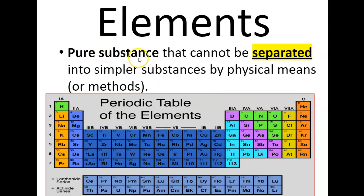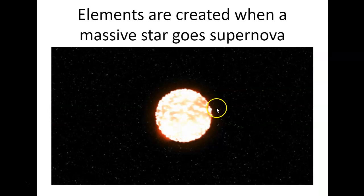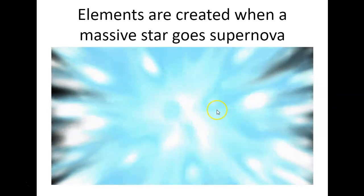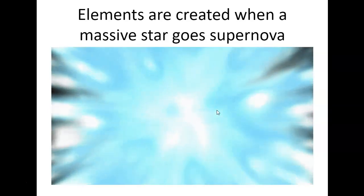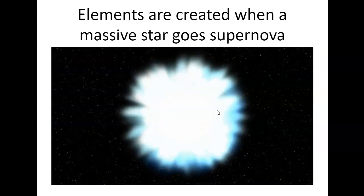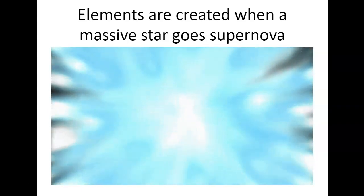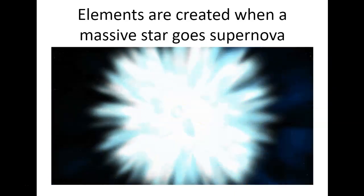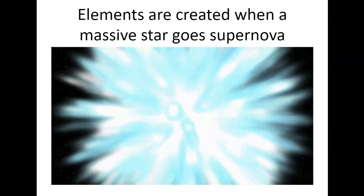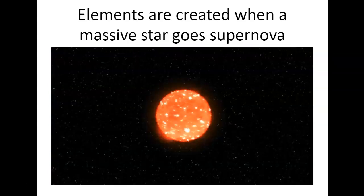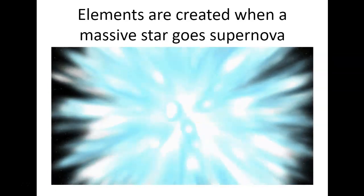Elements are pure substances that cannot be separated into simpler substances by physical means. Well how are the elements created? How do they get there? Elements are created when massive stars go supernova. The incredibly powerful explosion of a star going supernova causes elements to be created. The atoms smash together and form different elements. So that is how elements are created.